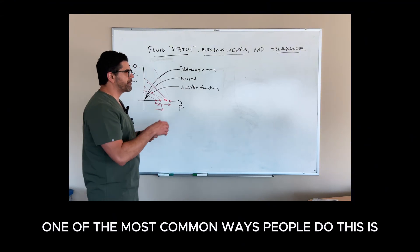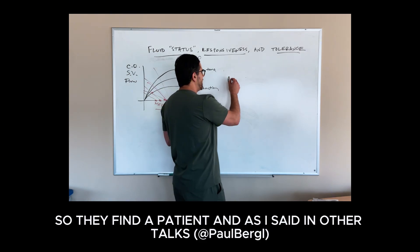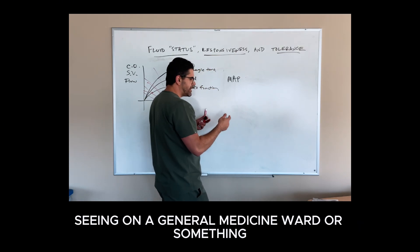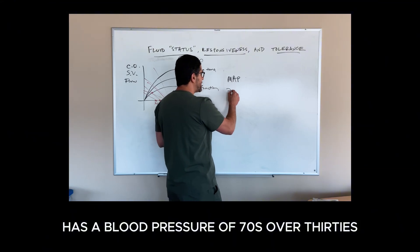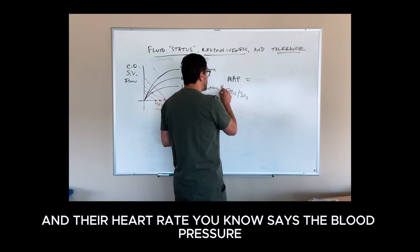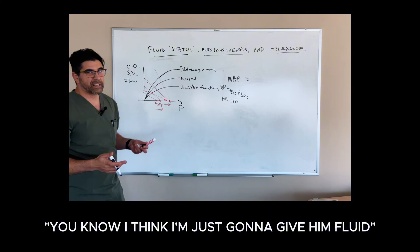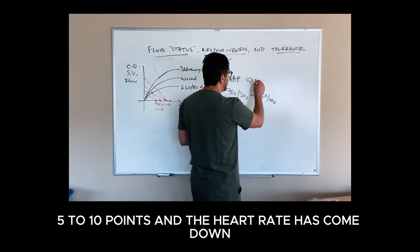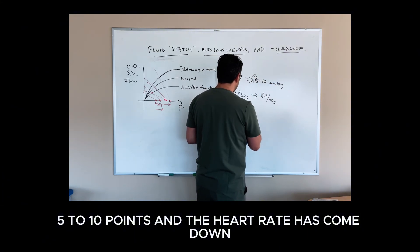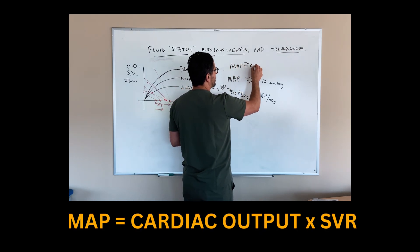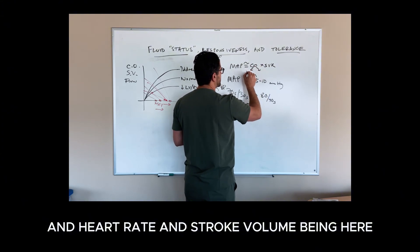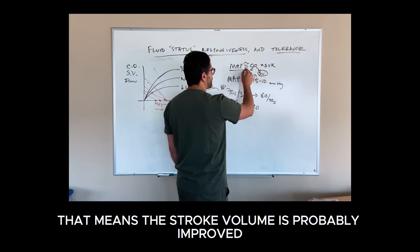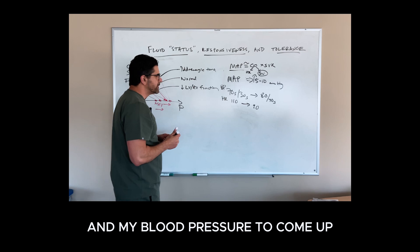One of the most common ways people determine fluid responsiveness is somewhat empirically. They find a patient, and the blood pressure is not the only marker of shock, but thinking about a patient that comes in with a blood pressure of seventies over thirties, low mean arterial pressure, and their heart rate is 110. You say, well, I think I'm just going to give them 500 CCs of crystalloid and see what happens. If you have a change like this, and it's now eighties over forties, and the MAP has gone up five to ten points and the heart rate has come down, you might go back to your equation for MAP being roughly cardiac output times SVR with heart rate and stroke volume here.